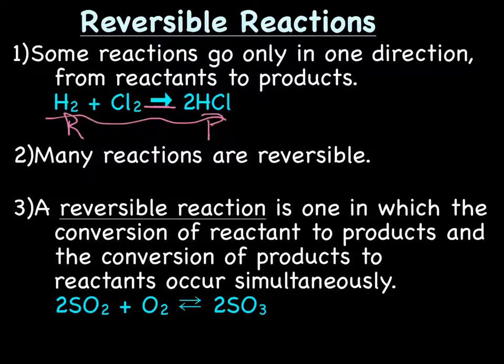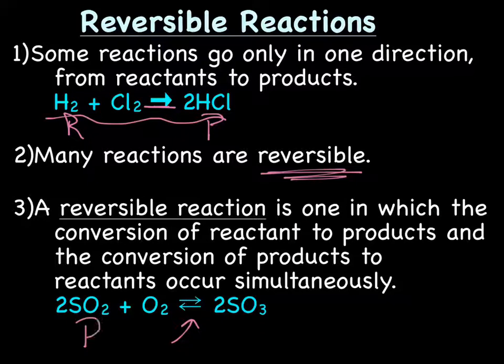This is the kind of reaction we've seen most of the time. It turns out, though, that many reactions are what we call reversible. A reversible reaction is one in which the conversion of reactants to products and the conversion from products back to reactants occurs simultaneously. For example, SO2 plus O2 produces SO3. You'll notice that the arrows are going both directions — these are the reactants, and that is the product. However, at some point, the products start going back and making the reactants. That is a reversible reaction.